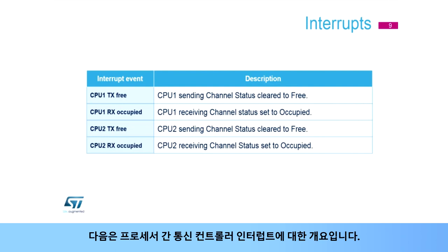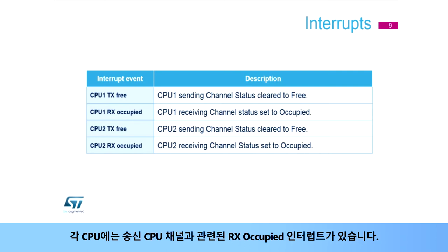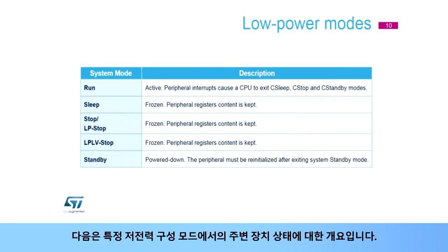Here is an overview of the Interprocessor Communication Controller interrupts. Each CPU has a TX-free interrupt associated to its own sending channel. Each CPU has an RX-occupied interrupt associated to the sending CPU channel.